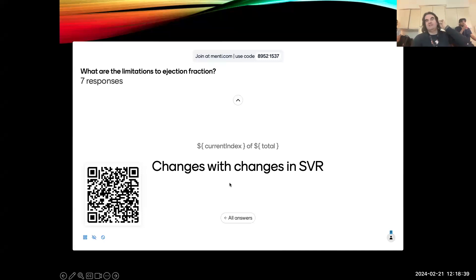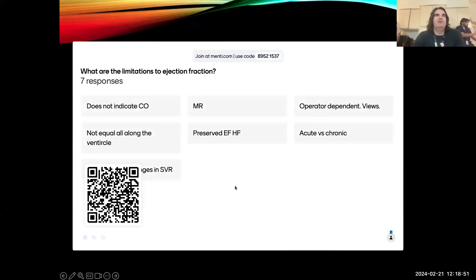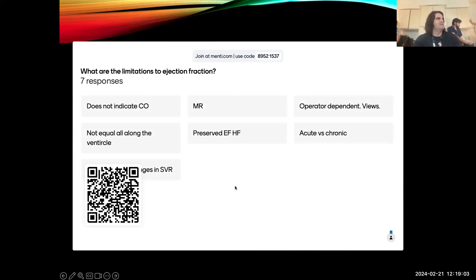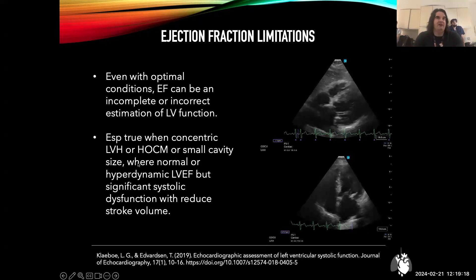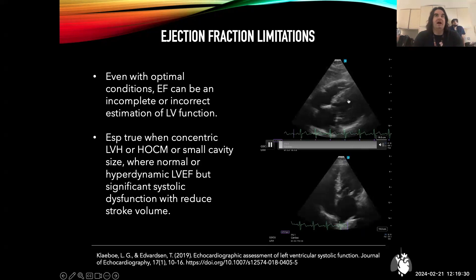Ejection fraction is load dependent and state dependent, so it can change. If you have higher or lower preload, it is affected by loading conditions. We see this all the time where we assess a patient and say the EF looks depressed — like 15-20% — and the next day cardiology comes by and says it's normal. Even with optimal conditions, EF can be an incomplete or incorrect estimation of LV function. This is especially true when there's LVH or HOCM with a small cavity size where visually it can look normal, but there's actually significant systolic dysfunction and reduced stroke volume. An LV that is very thick can appear to have a normal ejection fraction when it's actually depressed.